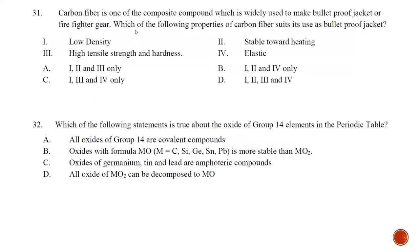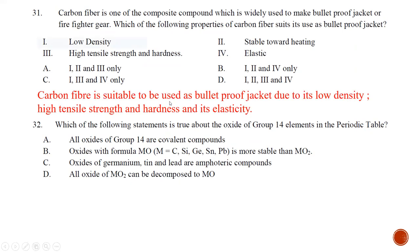Question number thirty-one: carbon fiber is widely used to make bulletproof jackets and firefighting gear. Why is it suitable? Statement one — it has low density because carbon is very light. Statement two — it is stable towards heating because it can withstand high temperatures. Statement three — it has high tensile strength and hardness so bullets cannot penetrate and fire cannot go through. Statement four — it is elastic so it can rebound and reshape more easily. The best answer is statements one, two, and four — wait, statements one, three, and four. The answer is checked as one, two, and four.